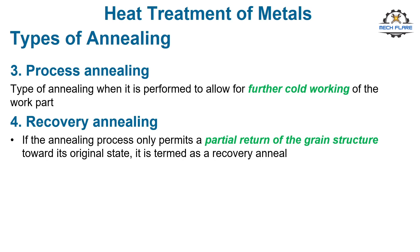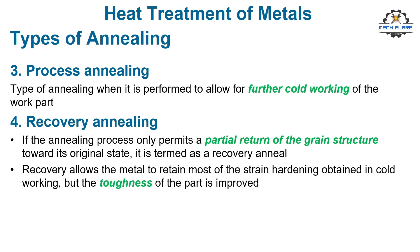After this type of anneal, the metal has the new geometry created by the forming operation, but its grain structure and associated properties are essentially the same as before cold working. The conditions that tend to favor recrystallization are higher temperatures, longer holding times, and a slower cooling rate. When the annealing process allows only a partial restoration of the grain structure — bringing it closer to its original state without fully achieving it — the process is referred to as a recovery anneal. Recovery allows the metal to retain most of the strain hardening obtained in cold working, but the toughness of the part is improved.